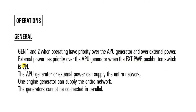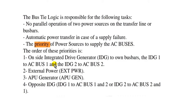When the external power switch is on, the APU generator or external power can supply the entire network. Take care: there is no parallel operation of two power sources. The priority of power sources to supply the AC buses follows a specific order.